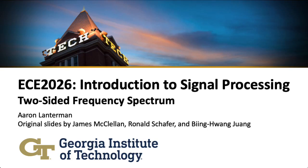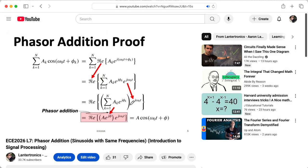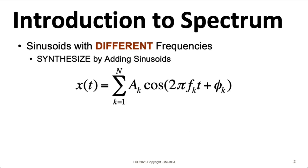Hi there. My name is Aaron Lanterman. I'm a professor of electrical and computer engineering at Georgia Tech. In the last lecture of EC2026, Introduction to Signal Processing, we talked about how if you add sinusoids and those sinusoids have the same frequency, they combine into a new sinusoid that has the same frequency. If you have a bunch of sinusoids with different frequencies, you can't combine them the same way. All of those frequencies just need to coexist, and that's fine. That makes life more interesting.